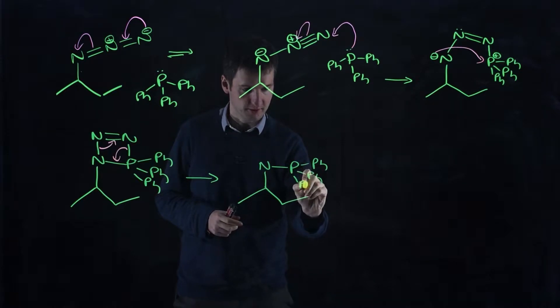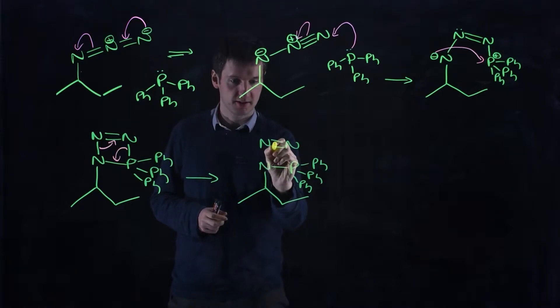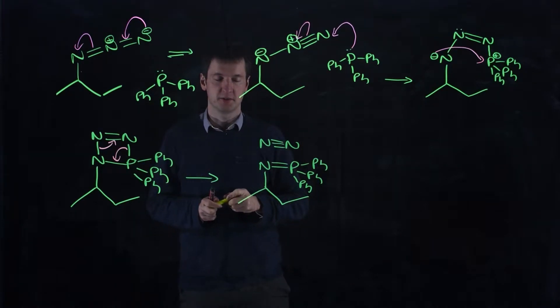Our three phenyl groups are still there. Those two bonds are still there. We took this pair of electrons. We've now got a nitrogen-nitrogen triple bond. And we took that pair of electrons. And we've now got a nitrogen-phosphorus double bond.